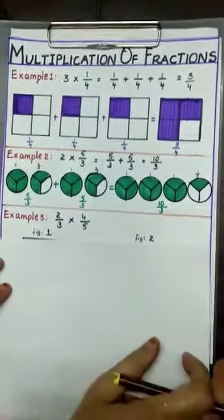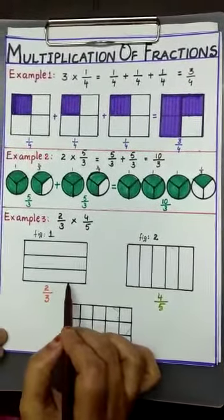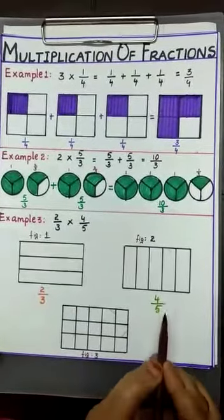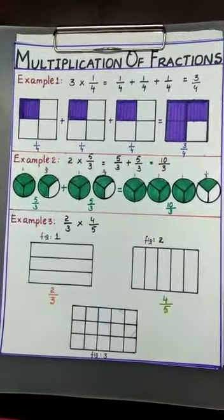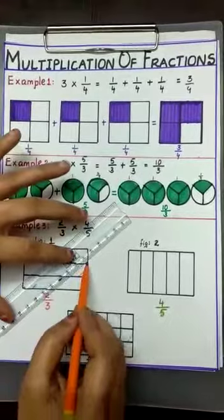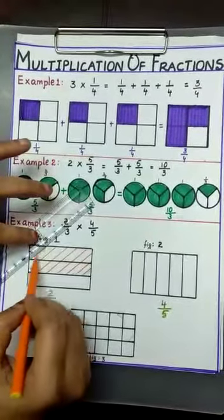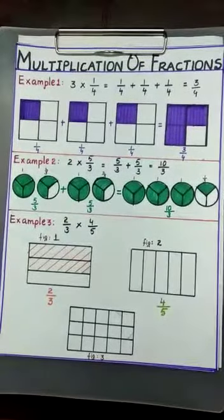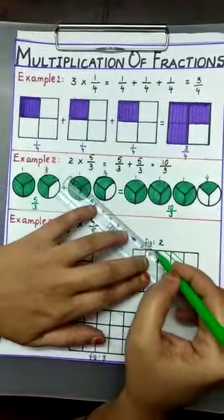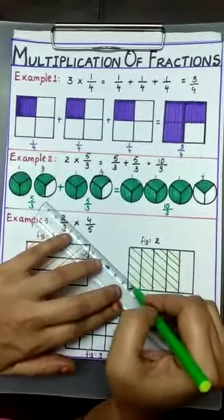Now the third example — let us multiply a fraction by a fraction. Here we have to select 2 parts out of 3 parts. This is 2/3. In the second figure, we have to select 4 parts out of 5 parts. Change the direction here. This is 4/5.